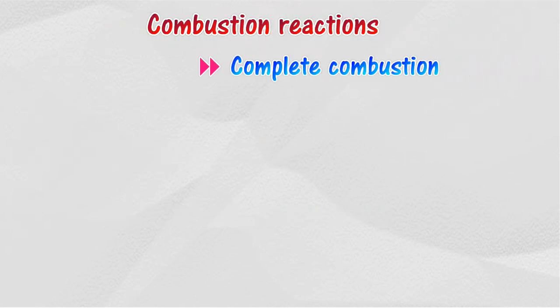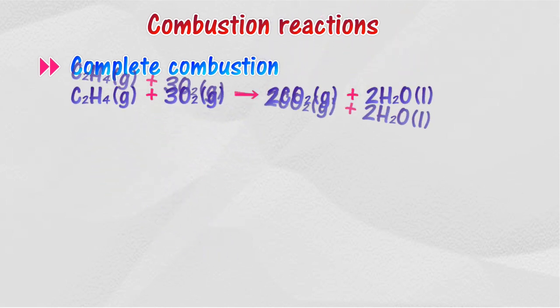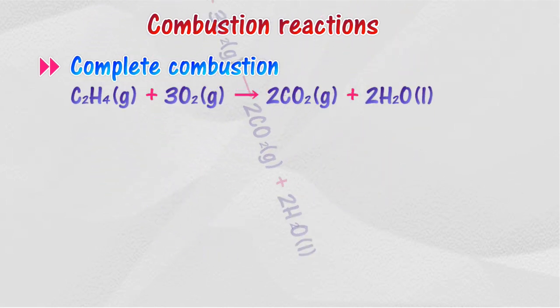In the event of excess oxygen, all alkenes burn completely to produce carbon dioxide and water. The complete combustion of alkenes produces a lot of heat energy, so alkenes are good fuels.